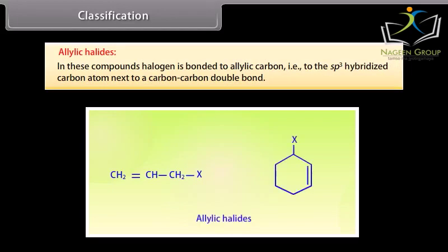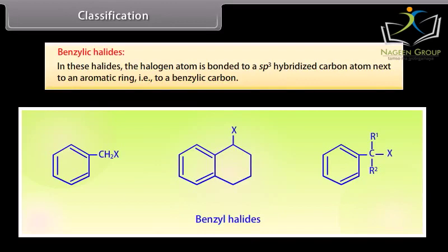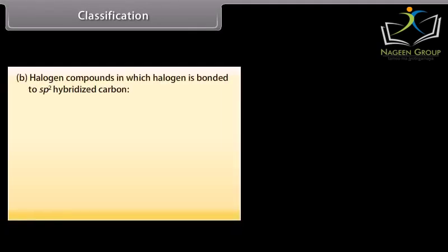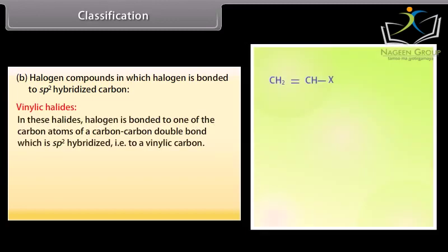Allylic halides: In these compounds, halogen is bonded to an allylic carbon, that is to the sp3 hybridized carbon atom next to a carbon-carbon double bond. Benzylic halides: In these halides, the halogen atom is bonded to an sp3 hybridized carbon atom next to an aromatic ring, that is to a benzylic carbon.